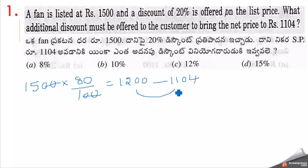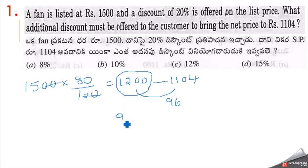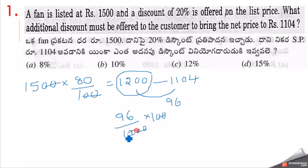If the discount is on the numerator, we find the denominator. The additional discount percentage: 96 divided by 1200 into 100. Two zeros cancel. 12 ones are 12, 12 eights are 96. That is equal to 8 percent. The percentage is 8 percent.